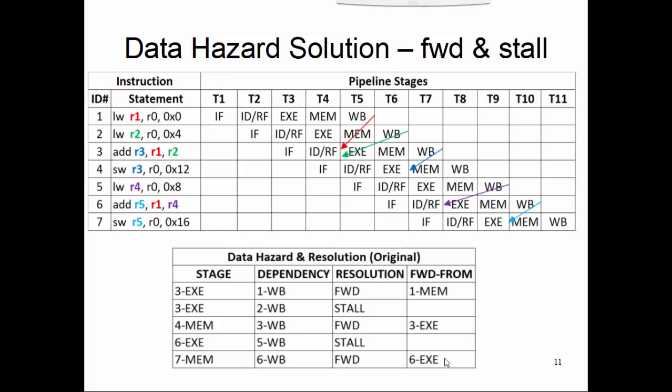Remember, if we introduce a stall, we also need to ask how many cycles of stall are needed. Usually it is one stall — I haven't seen more than one in most cases. One stall means we are shifting the pipeline stages of all successive instructions by one clock cycle. With that shift, it might happen that the next stall you identified is no longer needed, so you need to be careful about that cascading effect.